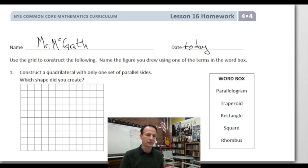Let's look at the word box: parallelogram, trapezoid, rectangle, square, and rhombus. We're to construct a quadrilateral with only one set of parallel sides. What shape do you create? I have a feeling you've got this stuff down. It's just definitions, right? So only one set of parallel sides.